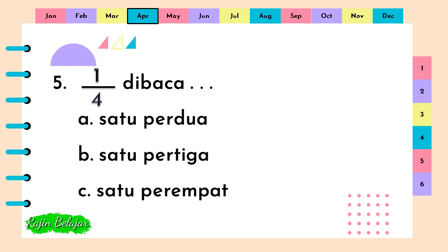Pecahan berikut ini dibaca titik-titik-titik. A. Satu per dua. B. Satu per tiga. C. Satu per empat. Jawaban yang benar adalah C. Satu per empat.